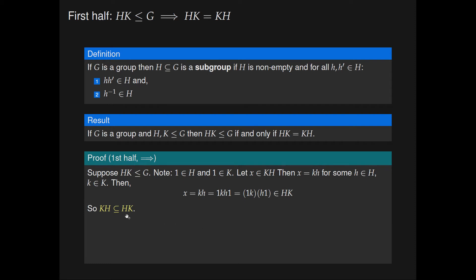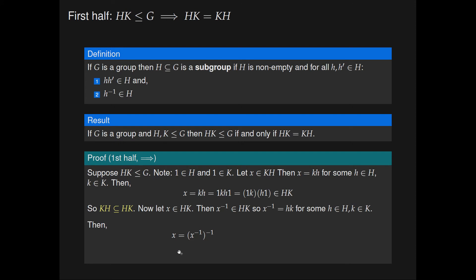Now we need to show the converse: that HK is contained in KH. Let x be an arbitrary element of HK. Because HK is a subgroup, property 2 holds, so x-inverse is also in HK. This says x-inverse equals hk for some h in H and k in K. Now x equals (x-inverse)-inverse. Substituting, x-inverse equals hk, so (hk)-inverse equals k-inverse·h-inverse, which is contained in KH. So x is contained in KH. Since x was arbitrary, HK is contained in KH. Together, HK equals KH, and we have shown the first implication.